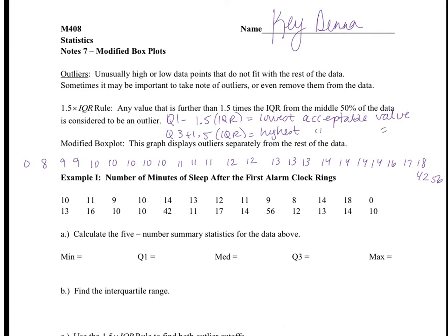In today's lesson we are going to talk about modified box plots. We talked the other day about how when you make a box and whisker, you have the box which contains the middle 50% of the data, and then the whiskers that extend to the min and the max.